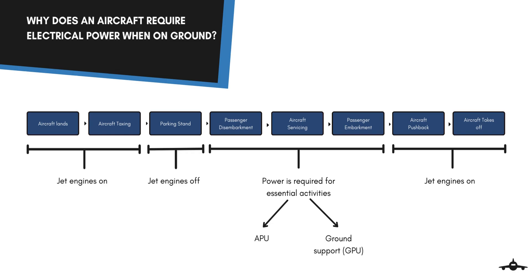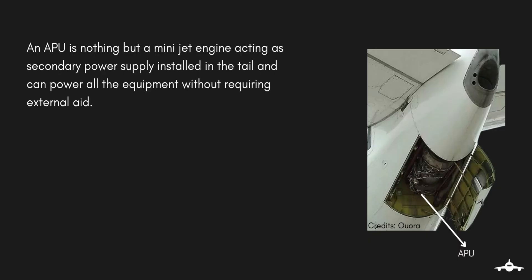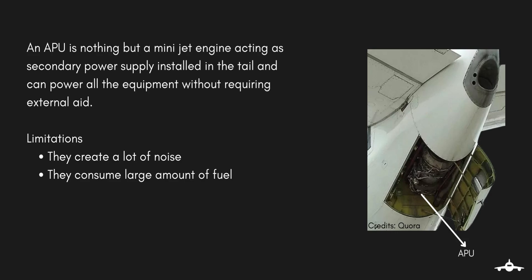An aircraft has two options: either to use an auxiliary power unit or a ground power unit. An auxiliary power unit is a mini jet engine acting as a secondary power supply, installed in the tail, and can power all the equipment without requiring any external aid. But there are limitations to its use — jet engines create a lot of noise and consume a large amount of fuel. Therefore ground power units are always preferred here.